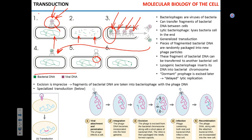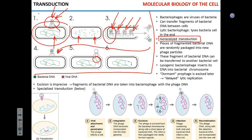This is called generalized transduction — there's no specificity to it. The bacteriophages that carry out generalized transduction are lytic: the original bacterial cell dies, because when up to 200 virus particles leave, they burst through the cell — like the Alien movie, 200 times over. These lytic bacteriophages carry out generalized transduction.